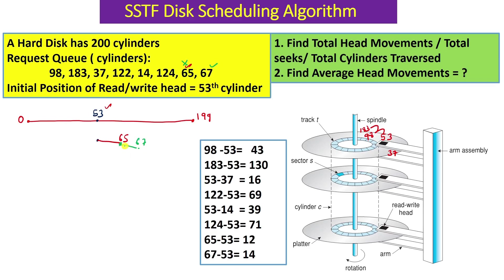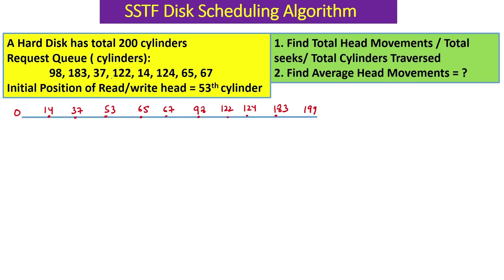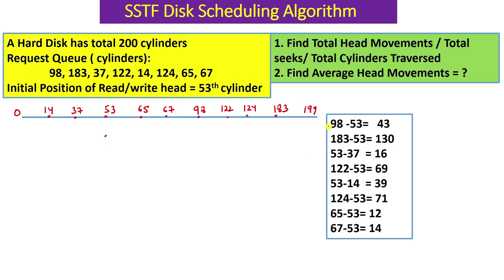At every iteration we move to the nearest or closest cylinder, giving us the minimum seek time - meaning we traverse fewer tracks from the current read/write head position. Now let's draw the reference line. Initially the 53rd cylinder is our current position. Finding differences between 53 and all other cylinders, the minimum difference is 65 minus 53 = 12, so we pick 65 first and move from 53 to 65.